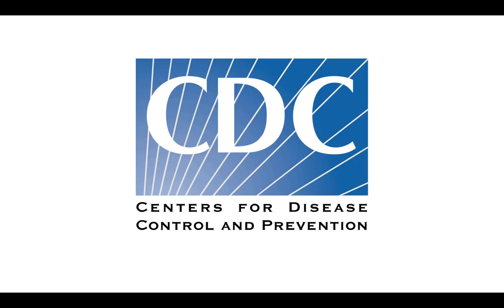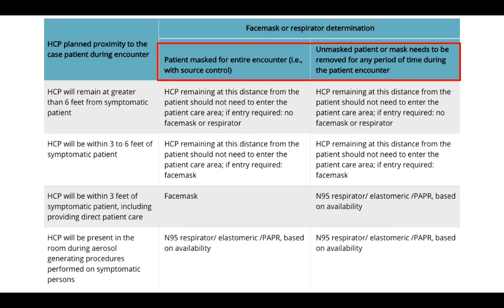What does the CDC say for protective guidelines? The most important thing to understand is that the patient needs to be masked for the entire encounter, so the guidelines vary depending on whether the patient is wearing a mask or is unmasked. These guidelines are for symptomatic patients. We've talked about asymptomatic carriers, but as far as CDC is concerned and real-world data goes, we are still not sure how much infection is transmitted by asymptomatic carriers.